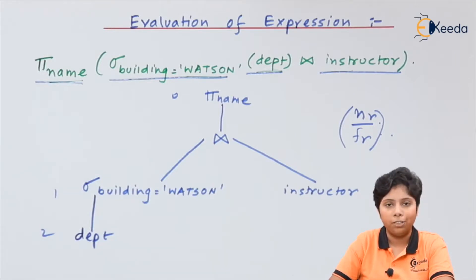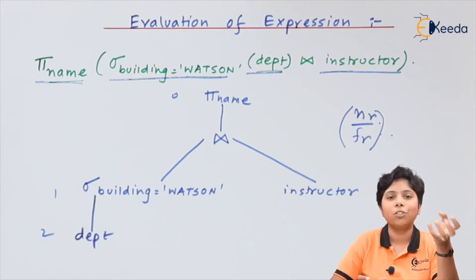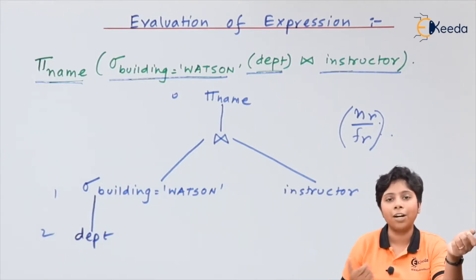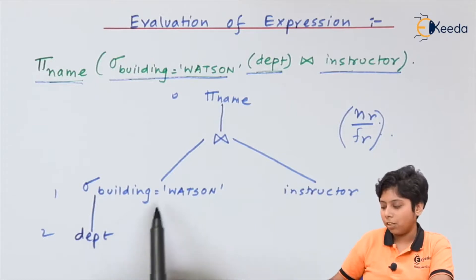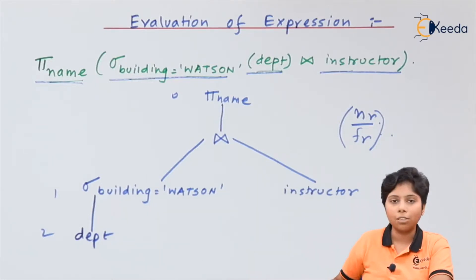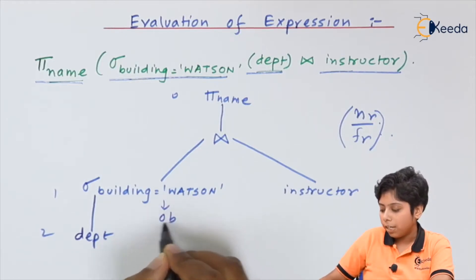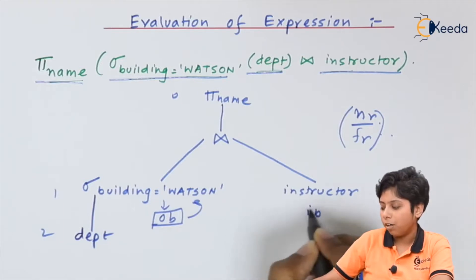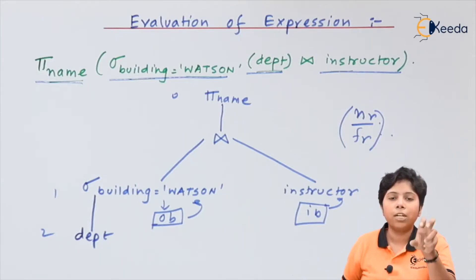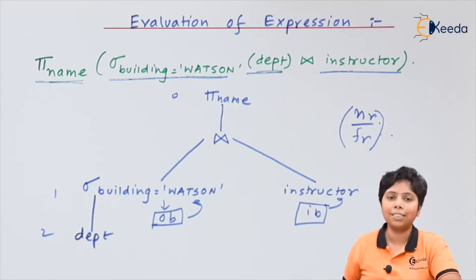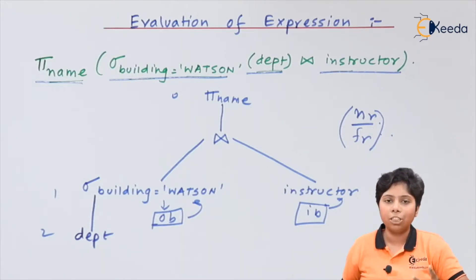To enhance materialization, we can use double buffering — adding an output buffer along with the input buffer so we can store the result of one query while another is being calculated. For instance, while selecting the Watson building from the department relation, we can simultaneously generate the instructor relation result. The input buffer calculates the result while the output buffer stores it, and the input buffer then performs the next calculation.